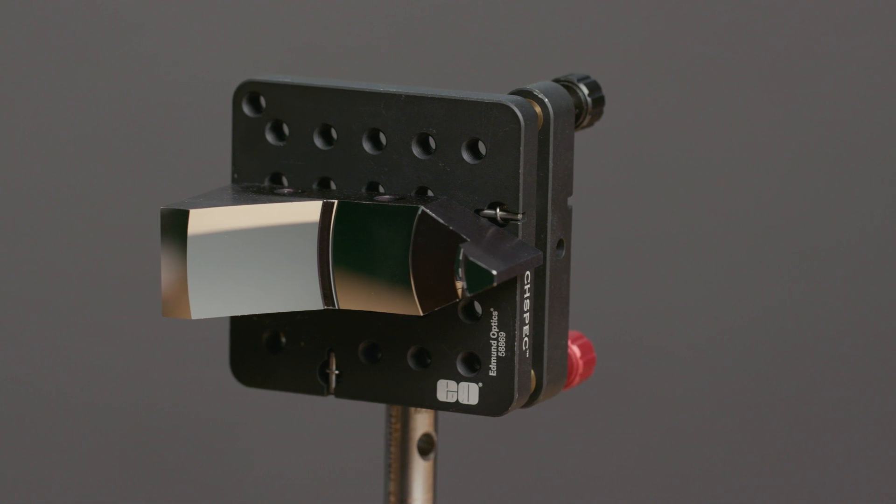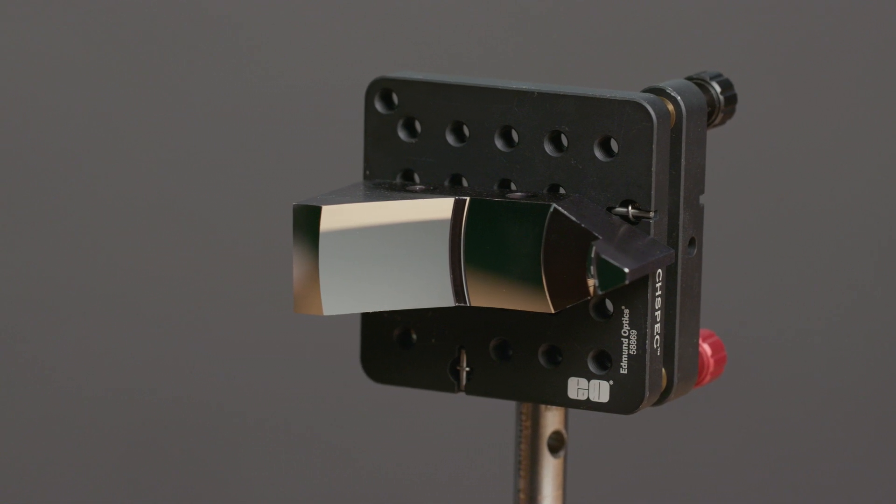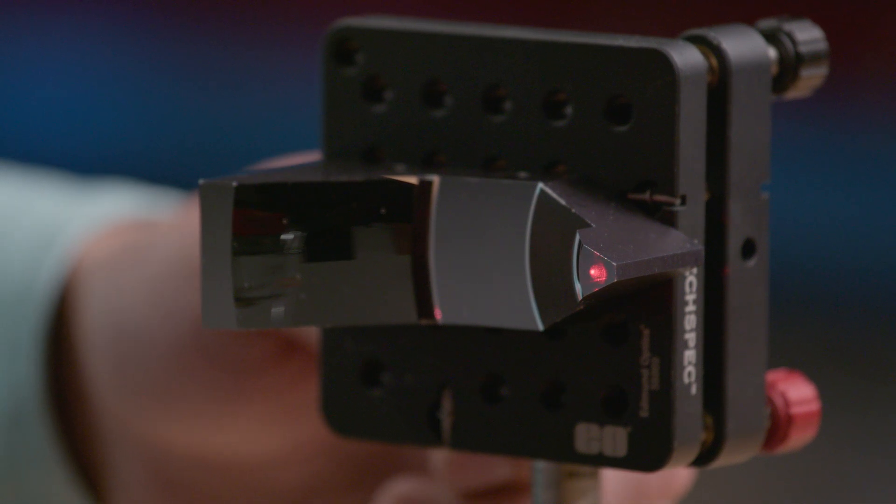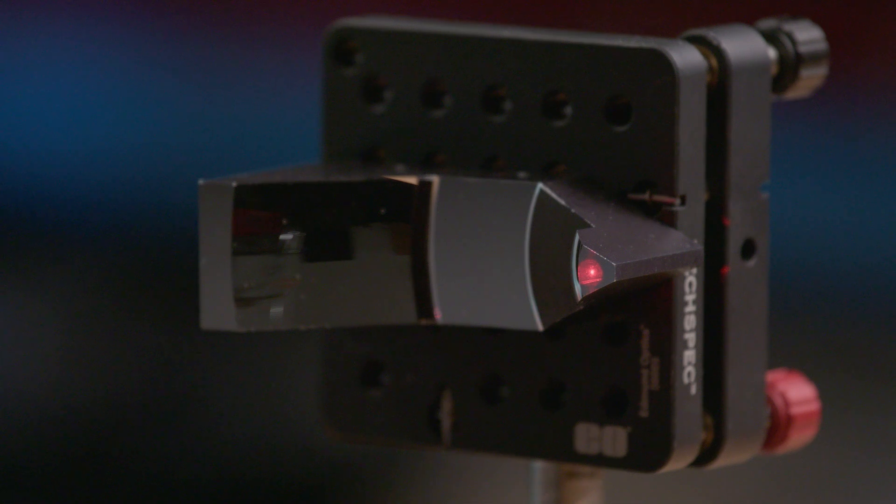These flat areas on the beam expander are manufactured in the same process as convex and concave faces. This allows us to use the flat faces as references for aligning the beam expander, as they are held to very tight tolerances.